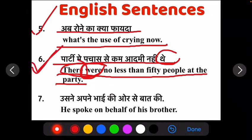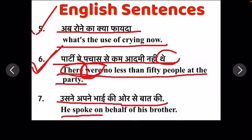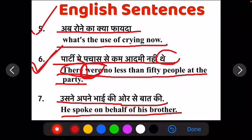Ab apna seventh sentence hai: usnay aapnay bhaai ki or se baat ki. He spoke on behalf of his brother. Ab yaha pere jahan apna 'behalf' aaya hai — woh 'ki or se' ke liye use hota hai, matlab usnay aapnay bhaai ki or se baat ki.